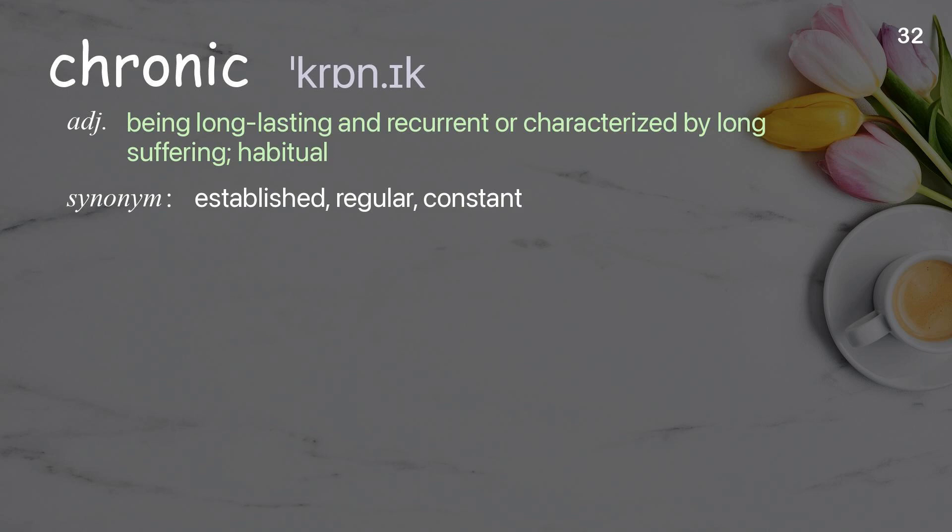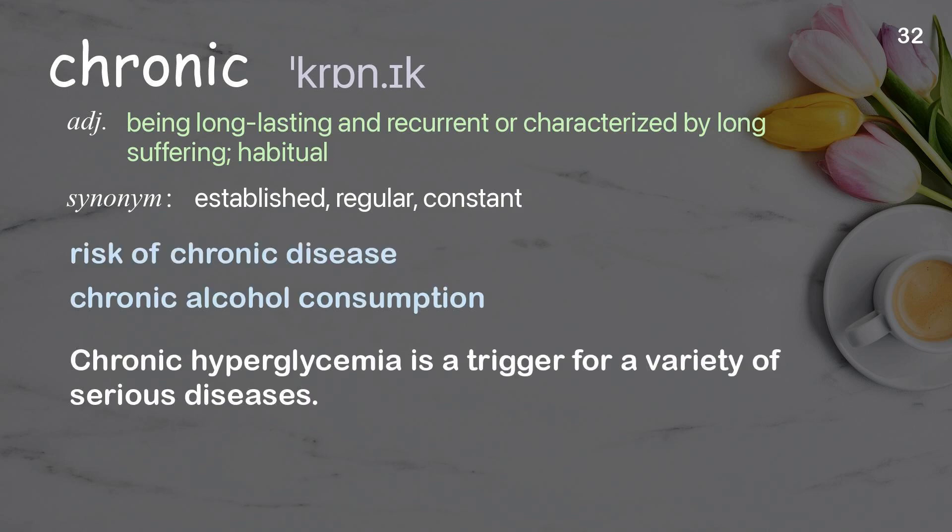Chronic: Being long-lasting and recurrent or characterized by long-suffering; habitual. Examples: Risk of chronic disease. Chronic alcohol consumption. Chronic hyperglycemia is a trigger for a variety of serious diseases.